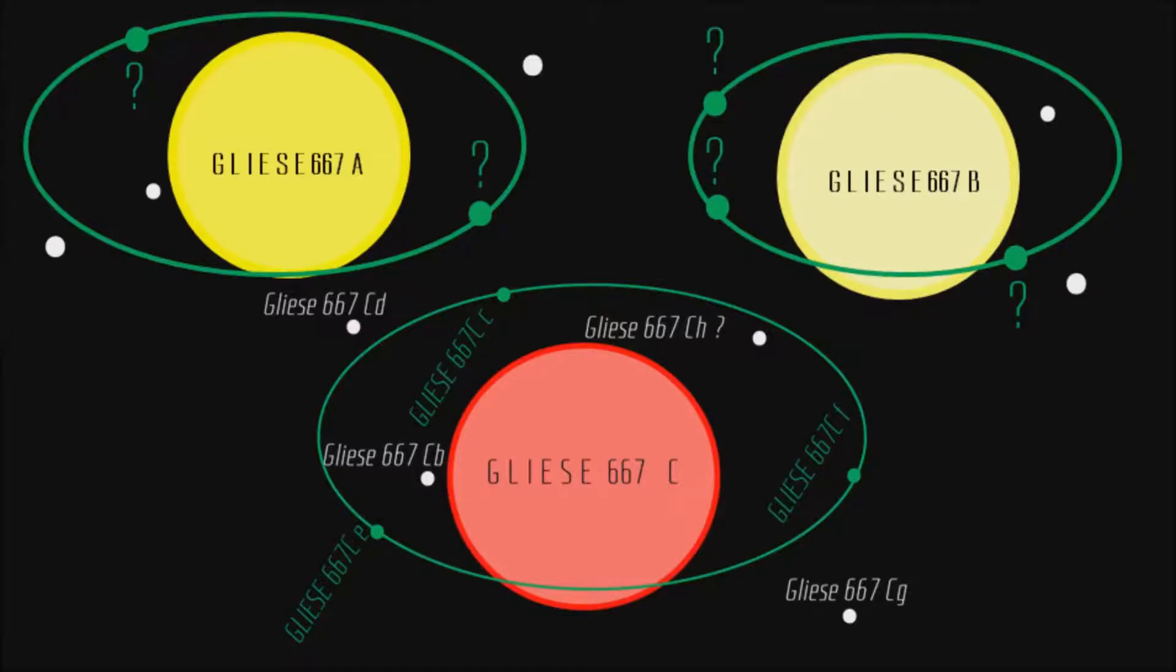Perhaps the Gliese 667 system is a place teeming with life. Like Cyrannus in Battlestar Galactica, if other potentially habitable exoplanets exist around Gliese 667A and 667B, reality could astound our imagination.